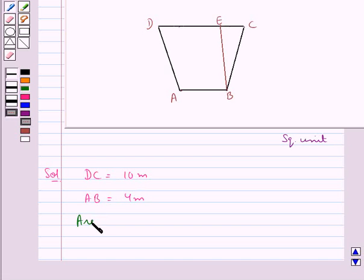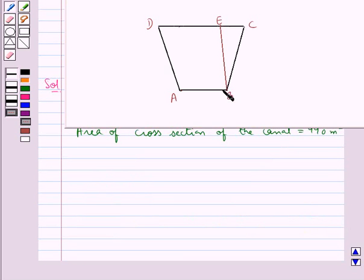And we are given that the area of the cross section of the canal is equal to 490 square meters. This BE is the depth of the canal, and let this be equal to d meters.